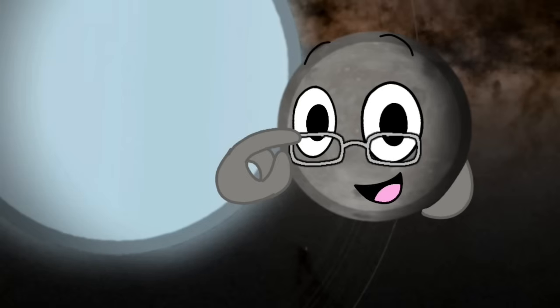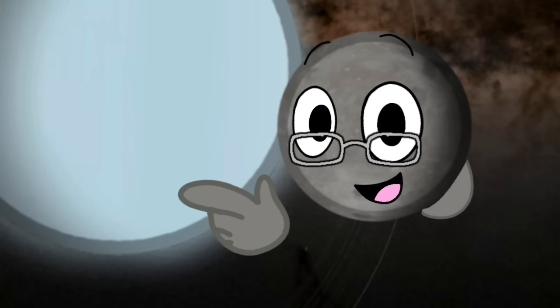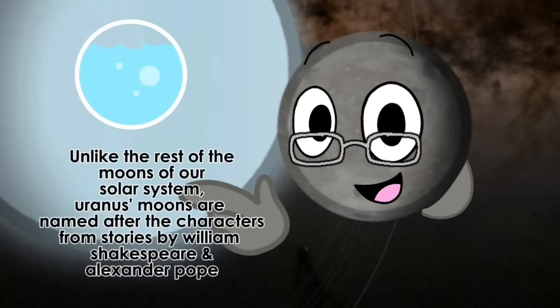And I'm Oberon, the furthest and reddest of the majors. This is due to micro impacts on the outer Uranian moons being pulled in by Uranus' gravity and showered onto us, giving us our reddish hue. All five of us have subsurface oceans under a crust of ice and rock. And we are named after the characters by William Shakespeare and Alexander Pope.